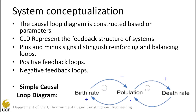A negative or balancing loop means that an increase or decrease in any parameter will have the opposite effect on the same parameter after a full rotation. Here is a simple causal loop diagram showing the relationship between birth rate, population, and death rate. As the birth rate increases, the population increases; as the population increases, the birth rate increases — so here we see a reinforcing loop, a loop that will continuously increase in time.